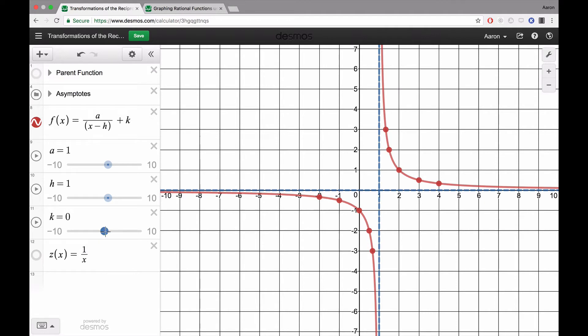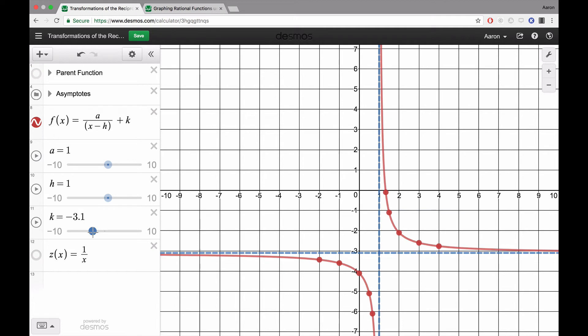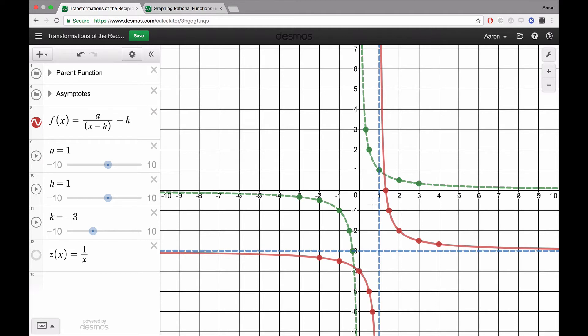The value of k shifts our graph up and down. If I went to k = -3, we can see that my graph has been shifted down 3 units. So from our parent function, it went right 1 unit and down 3 units.